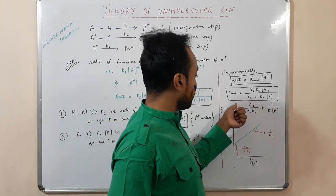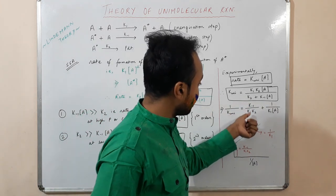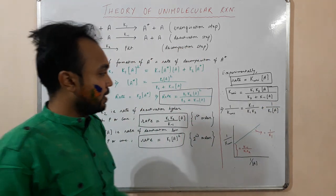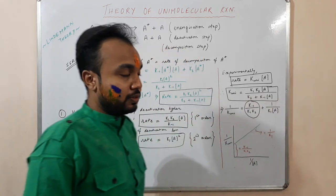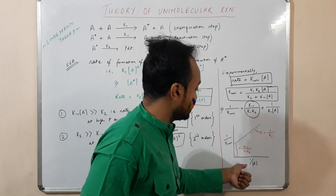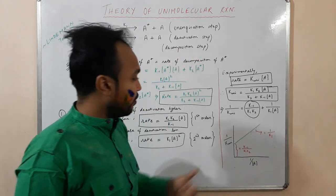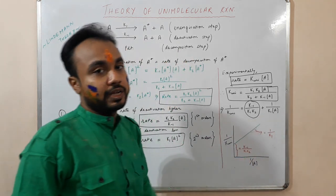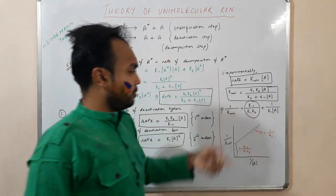Taking the reciprocal, we get 1/K_uni equal to K₋₁/(K₁K₂) plus 1/(K₁[A]). Here the first part is a constant. So if we plot 1/K_uni versus 1/[A], we get a straight line with slope 1/K₁ and intercept K₋₁/(K₁K₂). Numericals come from this formula.